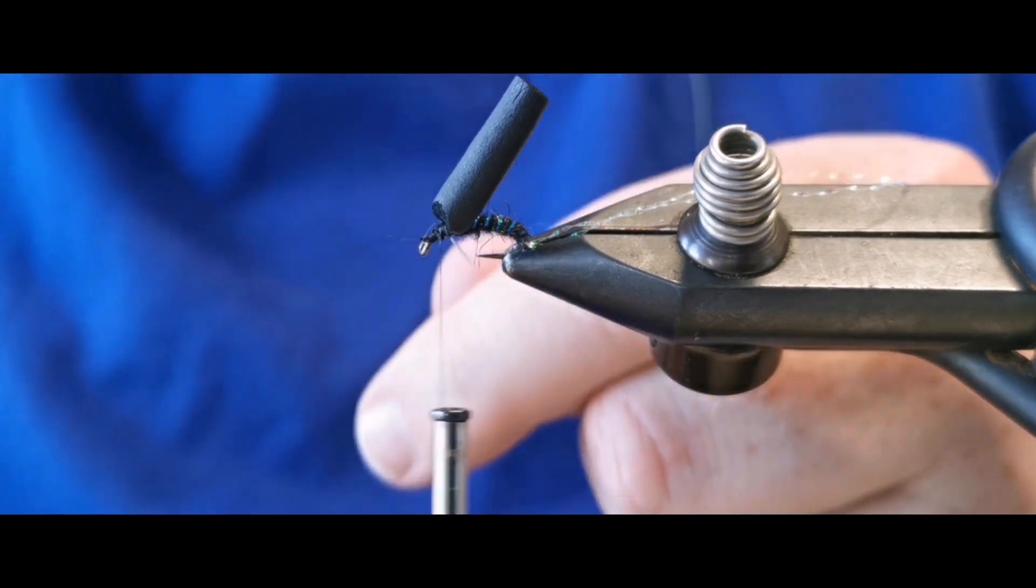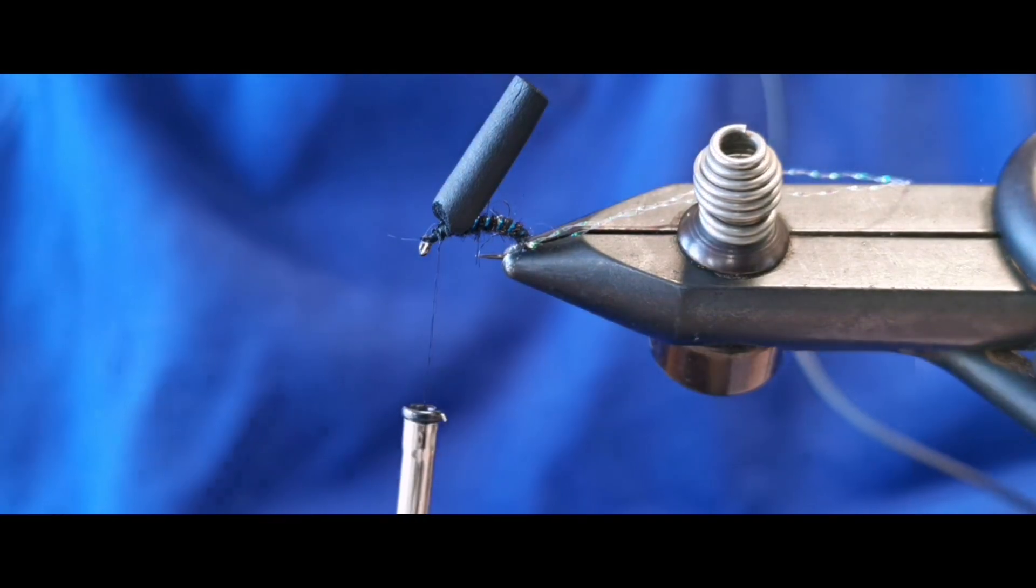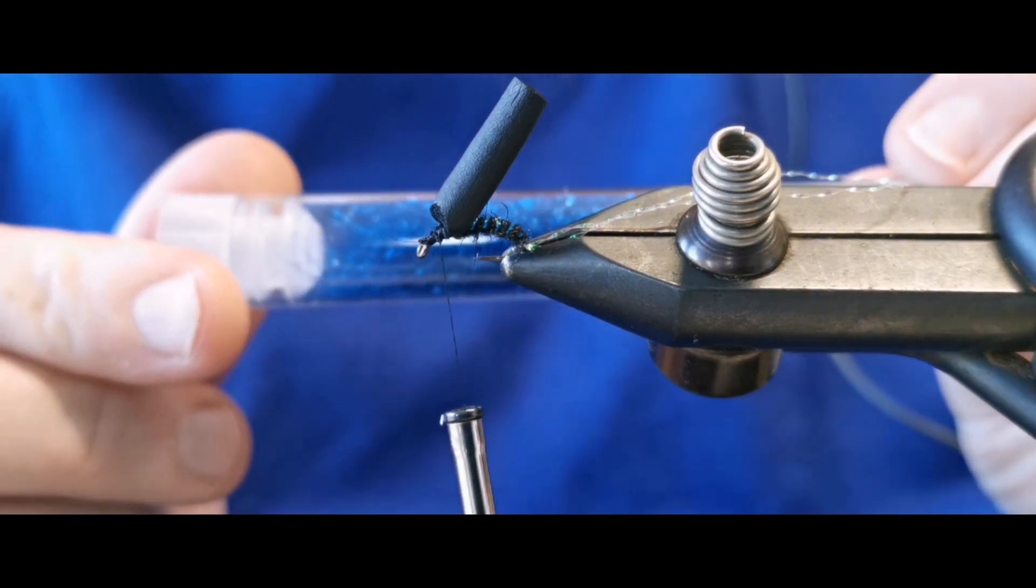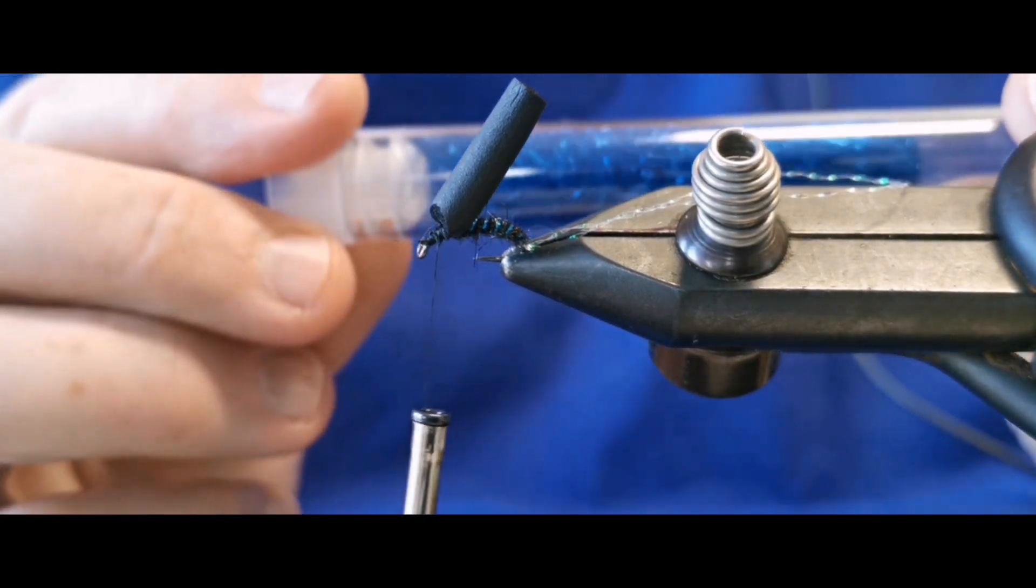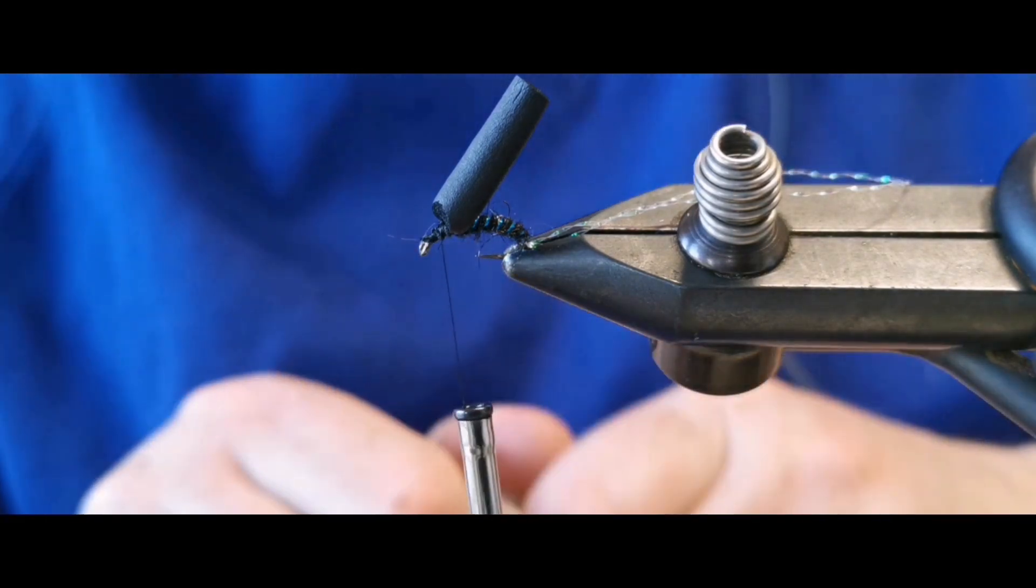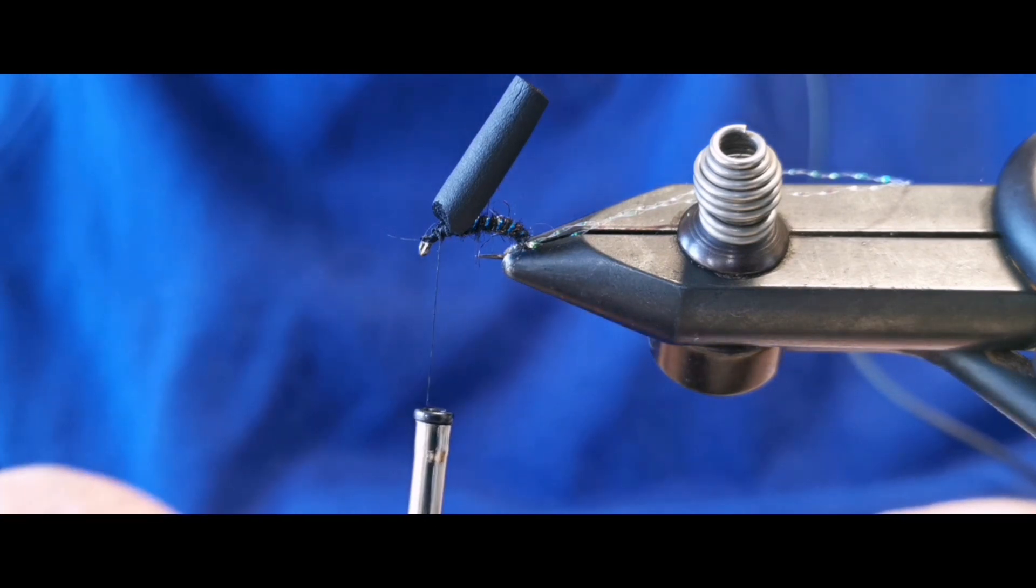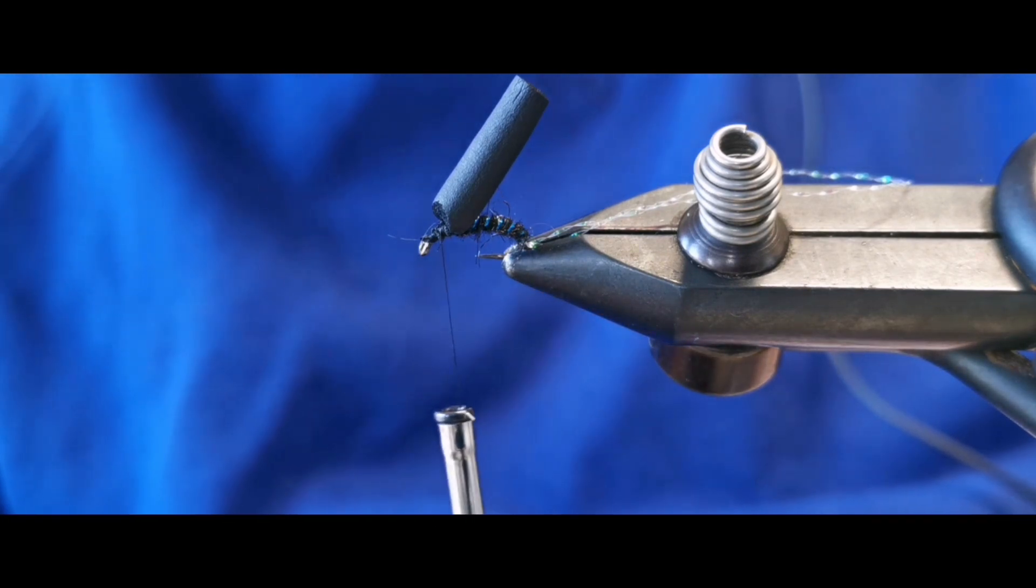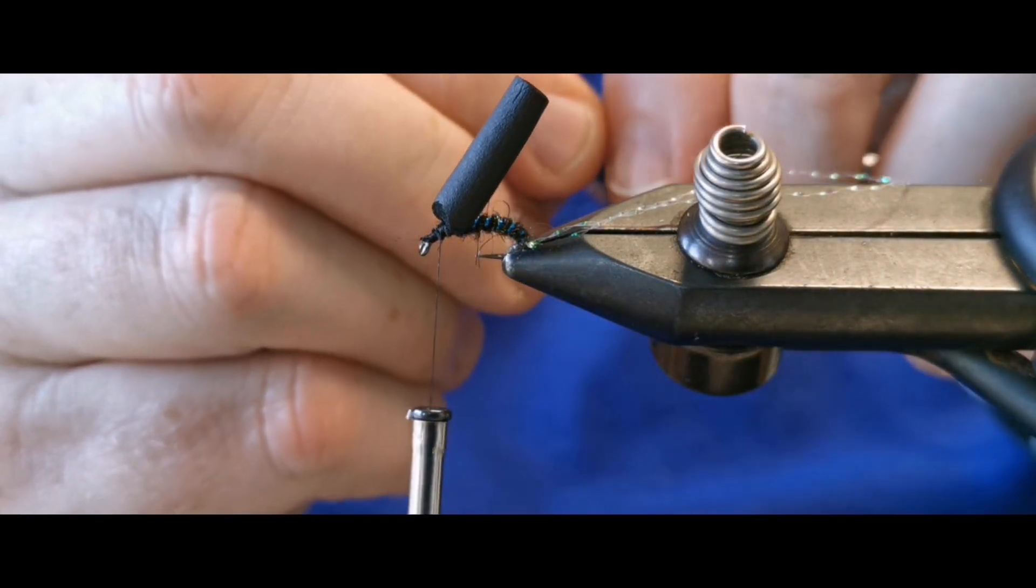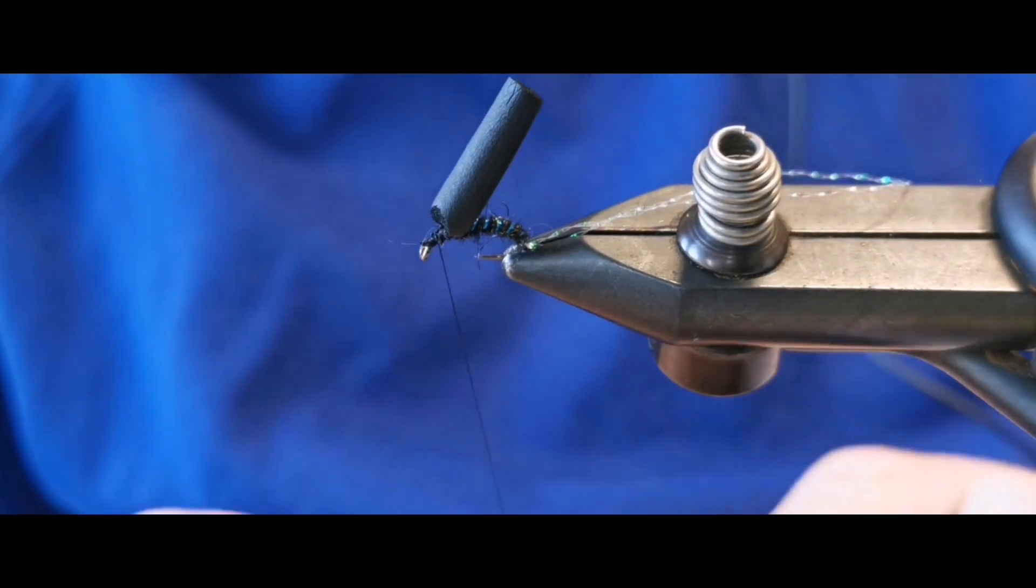And then tie that off in behind our baby foam. So at the head of our fly for our thorax, this is just glue flashed over and we only need a wee nip, not very much of this, the slightest wee pinch, and it's just to add color underneath the foam.